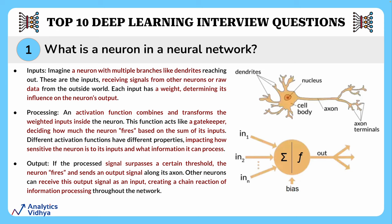Under inputs, imagine a neuron with multiple branches like dendrites reaching out — these are the inputs receiving signals from other neurons or raw data from the outside world. Each input has a weight determining its influence on the neuron's output.